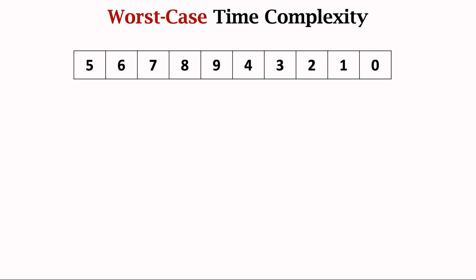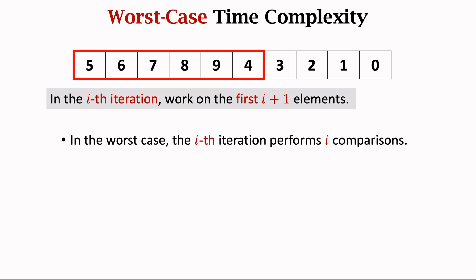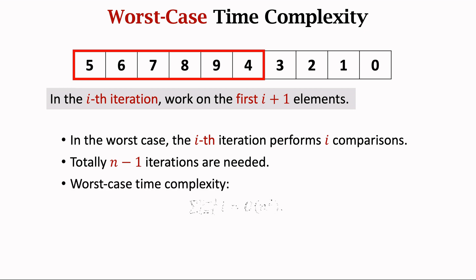Now let's analyze the time complexity. First, the worst case time complexity. In the i-th iteration, we work on the first i plus 1 elements. In every iteration, the key is compared with the elements in the red rectangle, and elements greater than the key are moved one step rightward. In the worst case, the i-th iteration performs i comparisons and swaps. There are n elements, so n-1 iterations are needed. The total number of comparisons and swaps is the sum of i from 1 to n-1, which is proportional to n-squared. Thus, the worst case time complexity is O(n²).